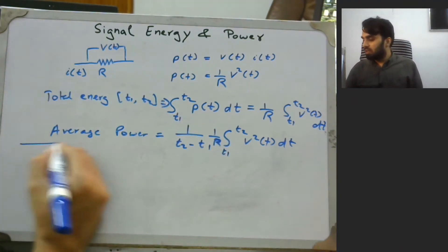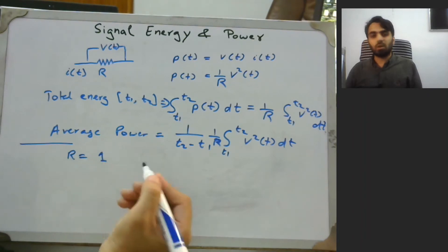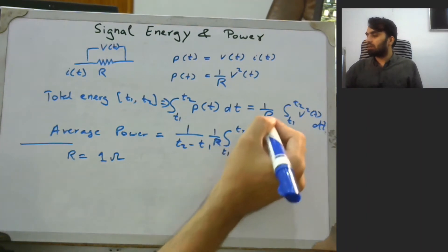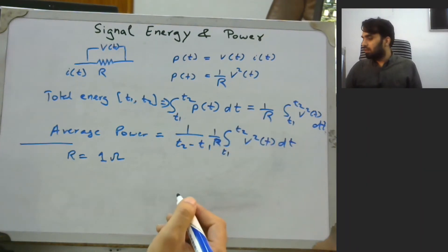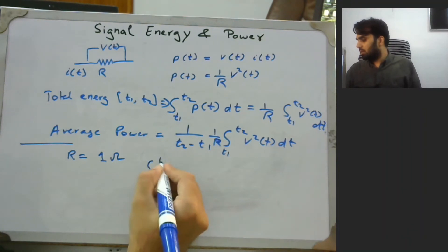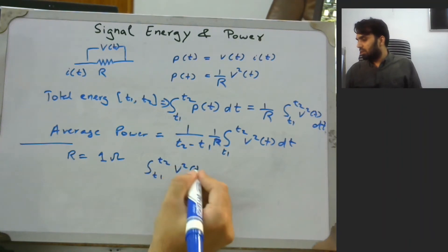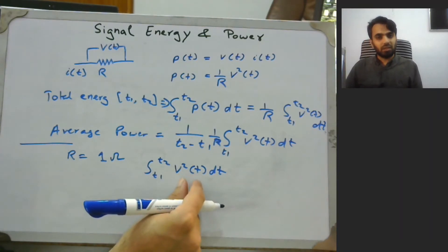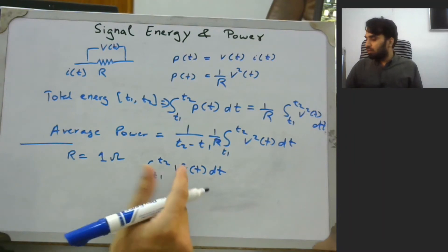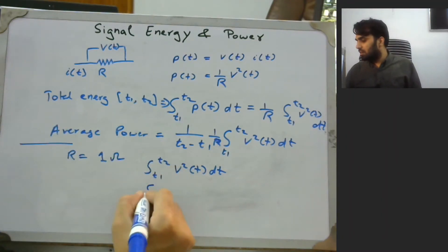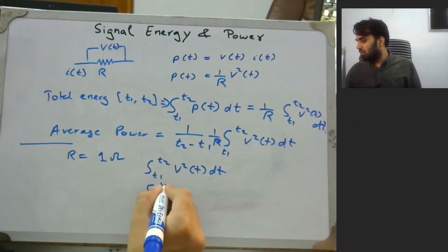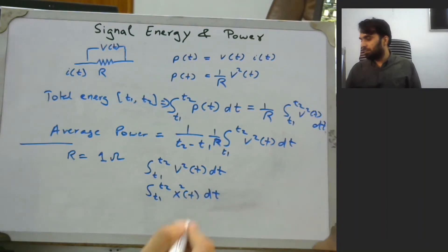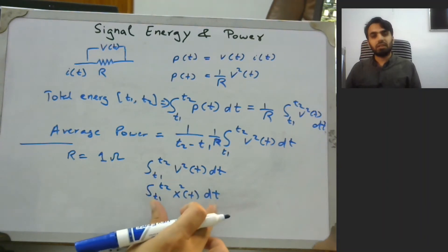For simplicity, we assume the resistor is a one-ohm resistor, which enables us to get rid of the variable R — we normalize it. Hence the total energy becomes the integral of v²(t) dt. Now, v(t) is a specific voltage signal, but this signal could be any signal, so let us generalize: the energy is simply the integral from t1 to t2 of |x(t)|² dt.